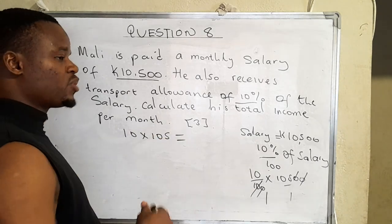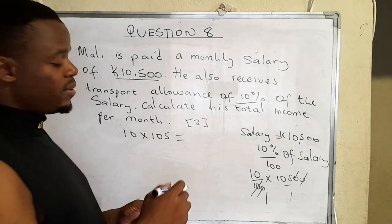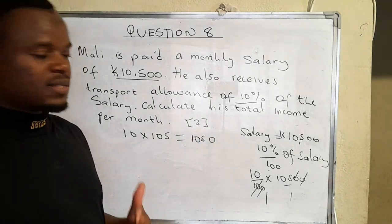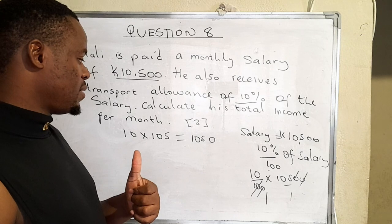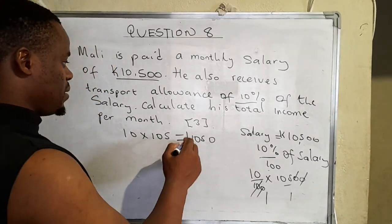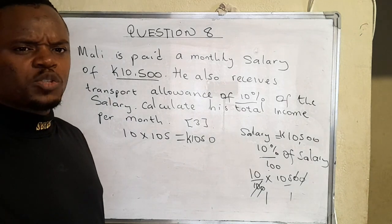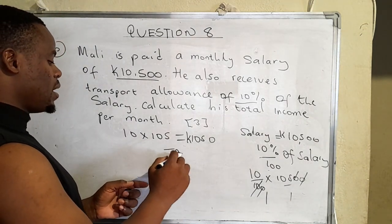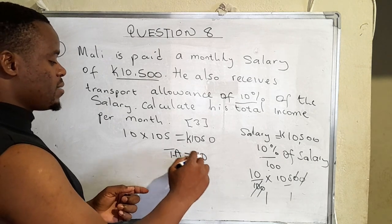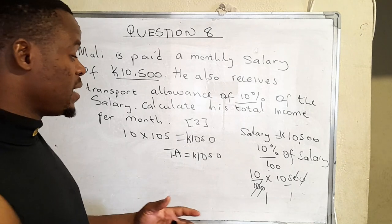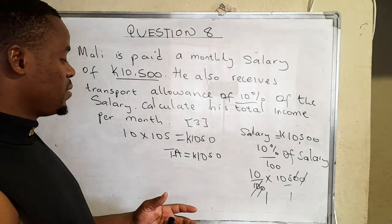Whenever you're multiplying ten by any number you simply add the zero from ten to that number, so that gives us one zero five zero — that's one thousand and fifty. That is the transport allowance, so transport allowance equals one thousand and fifty.